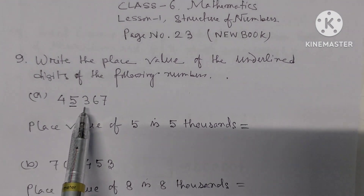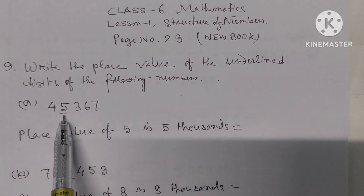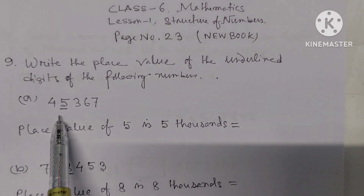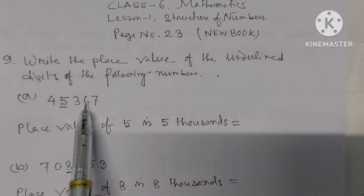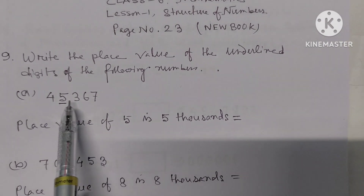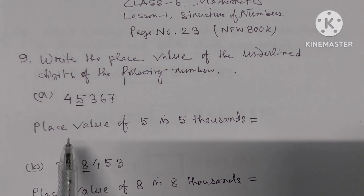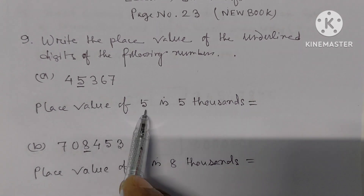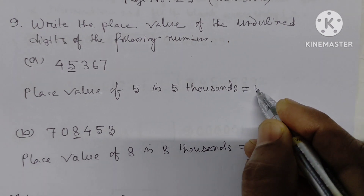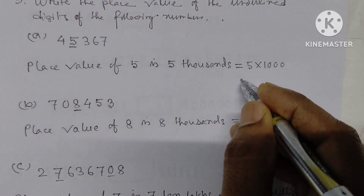Part A: 45367. We have to find the place value of the underlined digit, that is 5. Counting the places: ones, tens, hundreds, thousands — 5 is in the thousands place. The place value of 5 is five thousand. Five thousand means 5 into 1,000, that is 5,000.